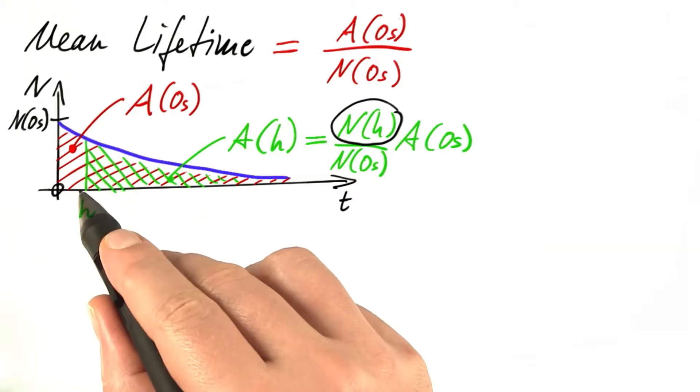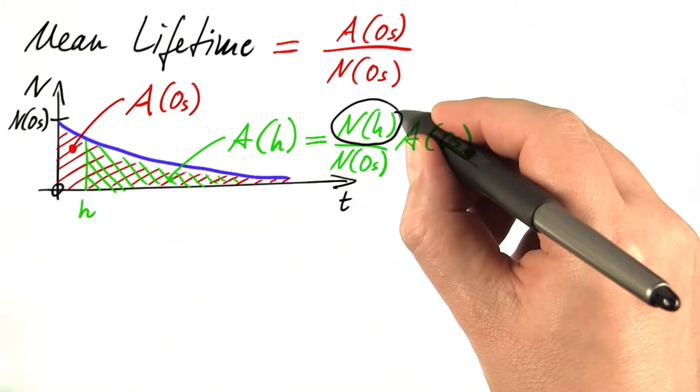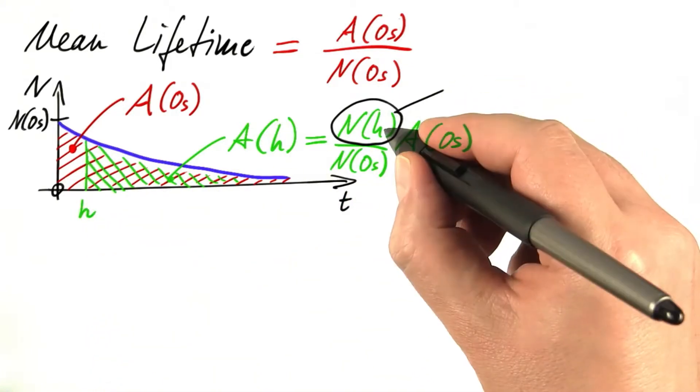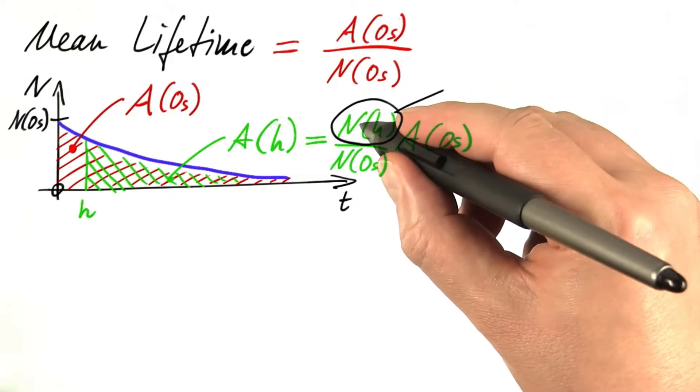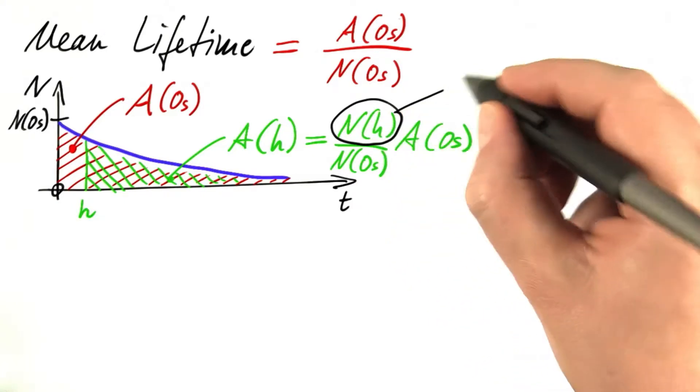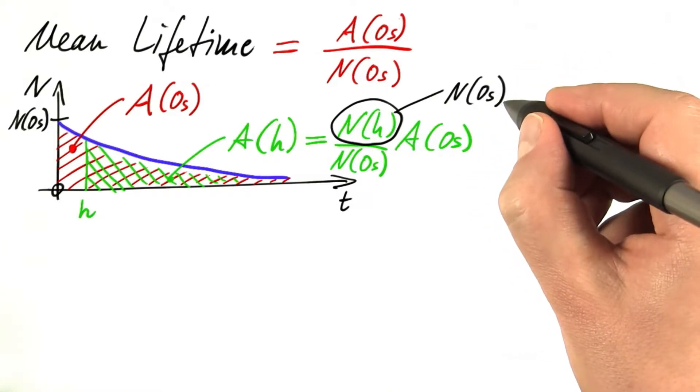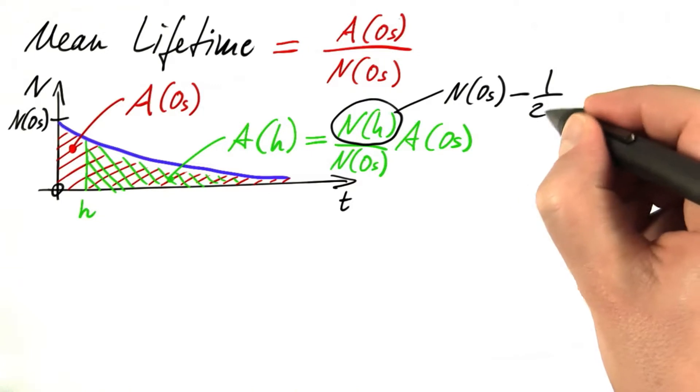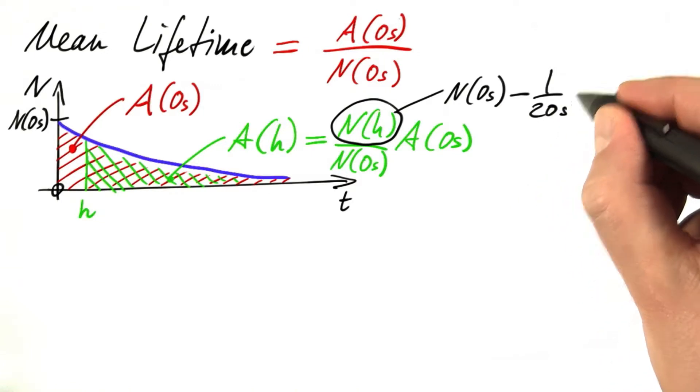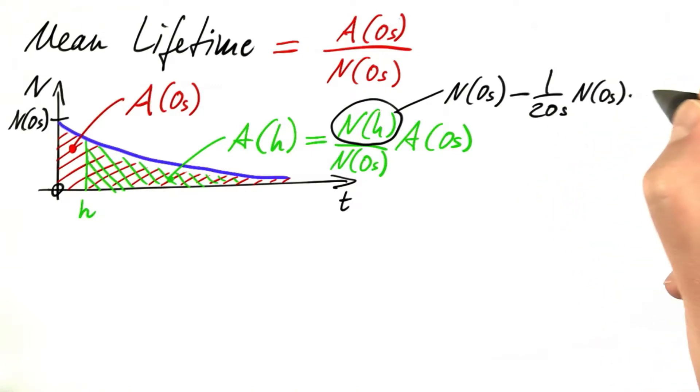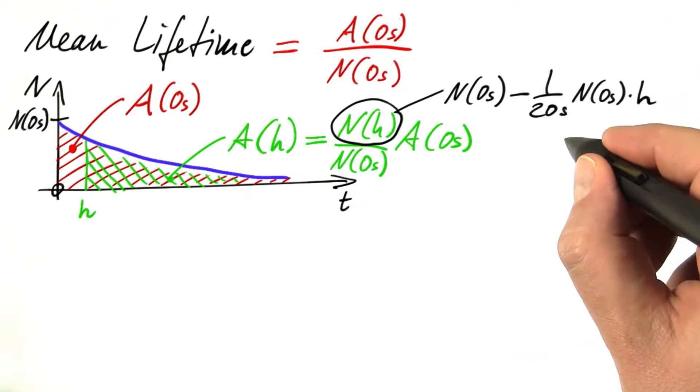For h close to 0, we can use the differential equation to get an estimate on n of h, the number of particles present at time h. That's the initial number minus how many particles have decayed. If we use the rate of change, then it's 1 over 20 seconds times the initial number times h, the time that we waited.